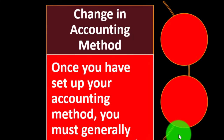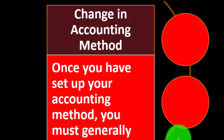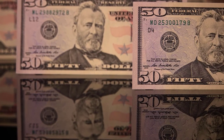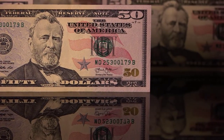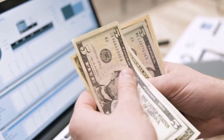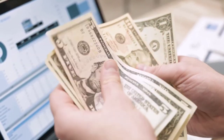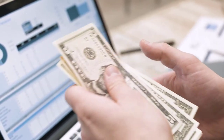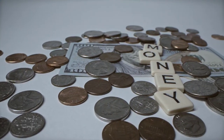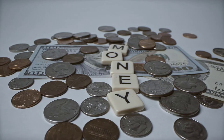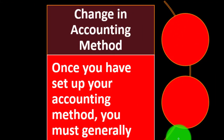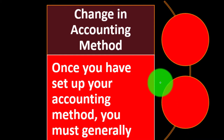We're looking now at a change in accounting method. In prior presentations, we talked about a cash method, an accrual method, and a combination method. Now we're thinking: what if I need to change the method? What if I marked off the wrong thing, or changed my process of accounting in the future? Am I locked into whatever method I put on that first tax return? It's important to pick the proper method on your first tax return, because you can't just change it willy-nilly — you've got to get permission.